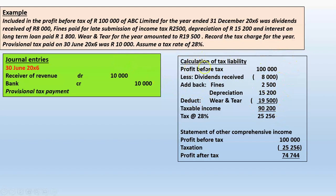The calculation starts with accounting profit before tax of 100,000 rand. Dividends received of 8,000 rand was included but is not subject to tax, so we deduct it. We add back the fine of 2,500 rand because fines are not deductible. Depreciation of 15,200 rand is also added back, and we instead claim the wear and tear allowance of 19,500 rand as a deduction. This gives a total taxable income for the year of 90,200 rand.